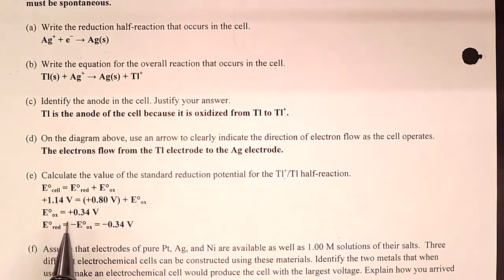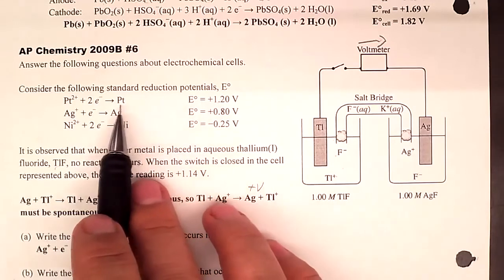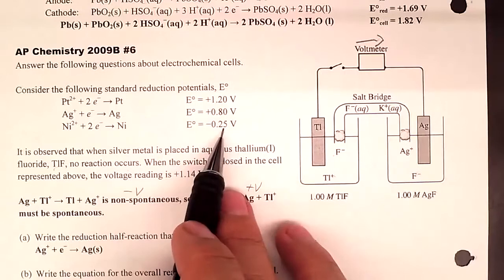To find the largest voltage, use the half-reactions from the table, which give reduction potentials. One must be reversed to act as oxidation. To get a spontaneous, positive overall voltage, flip the negative one — nickel in this case — to positive. Then choose the greatest positive as the reduction half-reaction. Adding the two gives the greatest possible positive cell potential from this set.